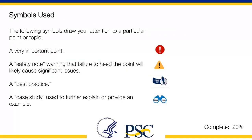The following symbols draw your attention to a particular point or topic. The red circle and exclamation point denotes a very important point. The yellow caution triangle denotes a safety note warning that failure to heed the point will likely cause significant issues. The blue exclamation point and banner denotes a best practice. And the blue binoculars denote a case study used to further explain or provide an example.